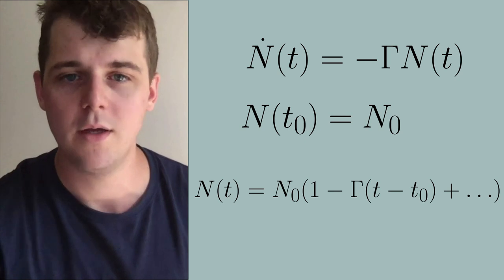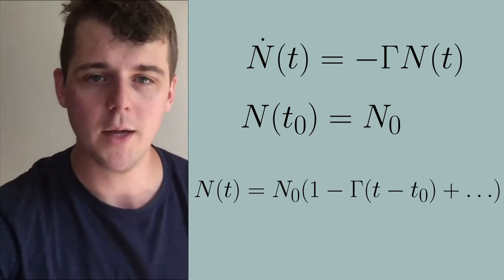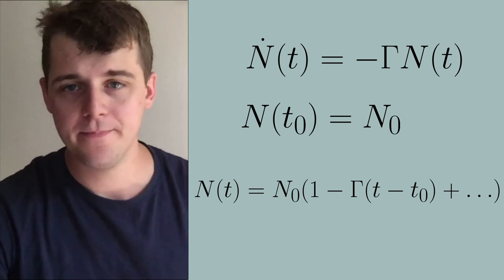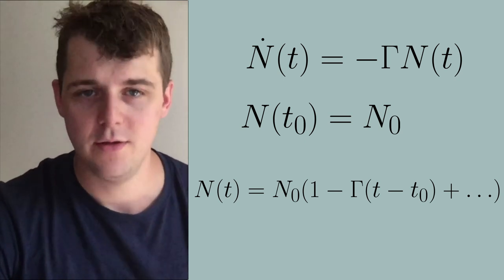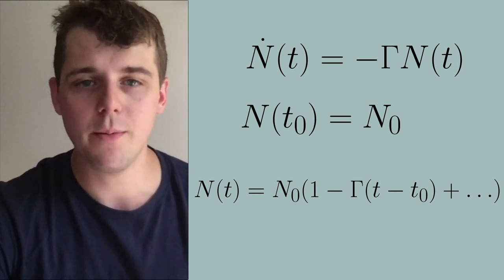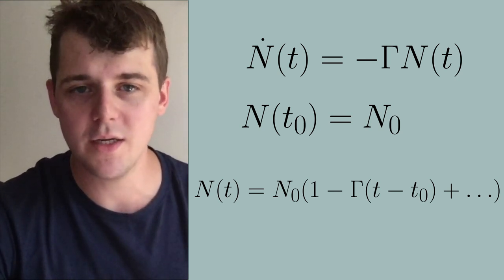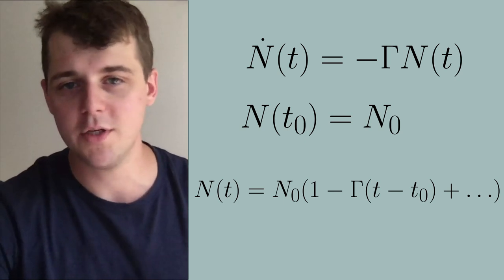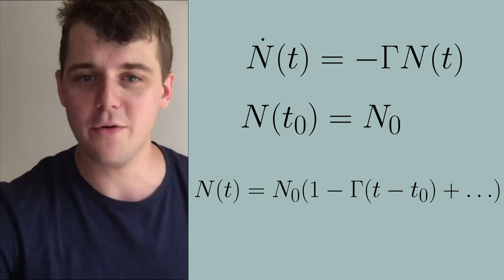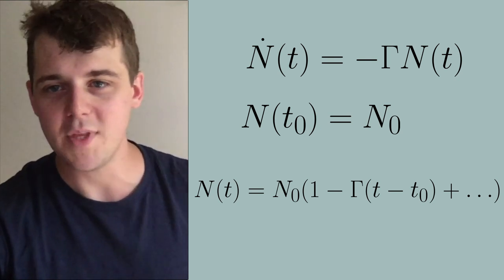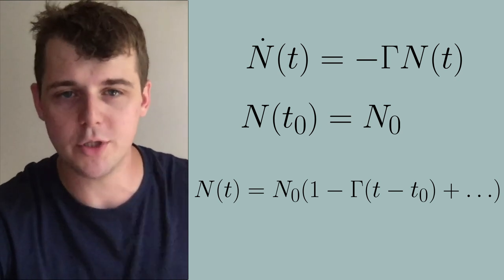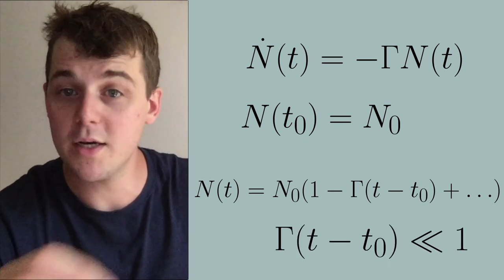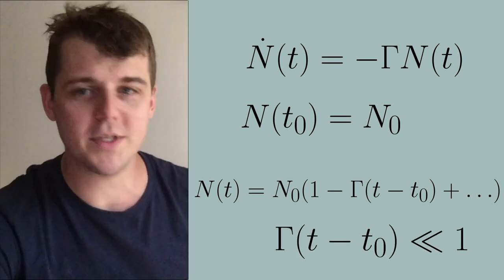As you can guess, we get the secular growth problem again: whenever gamma times (t - t_0) gets very large, we get this linear growth. We can only trust this perturbative solution for times where γ(t - t_0) is very small, otherwise we have the secular growth issue.